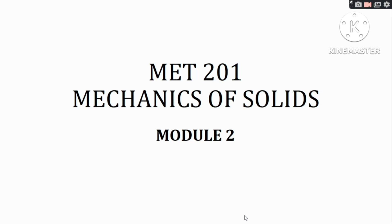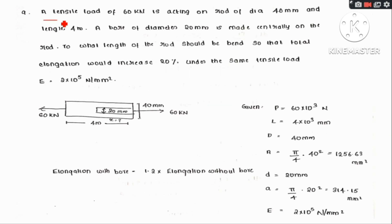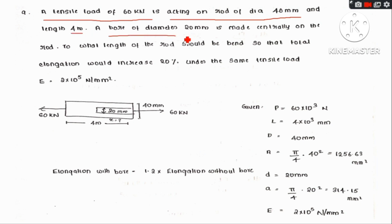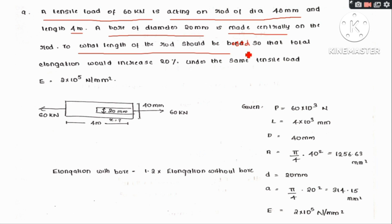Two problems are given. First problem: a tensile load of 60 kN is acting on a rod of diameter 40 mm and length 4 m. A bore of diameter 20 mm is made centrally on the rod. To what length should the rod be bored so that the total elongation would increase 20% under the same tensile load? Take E equal to 2 into 10 raised to 5 N/mm².